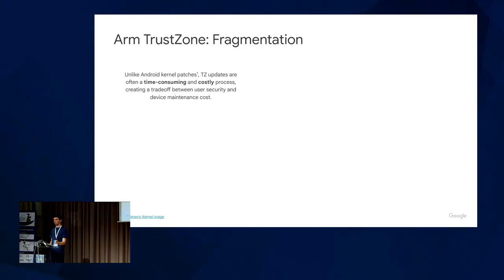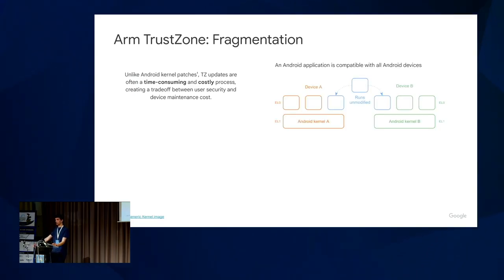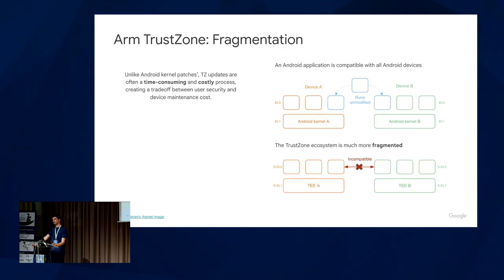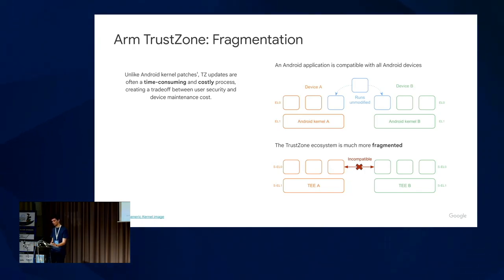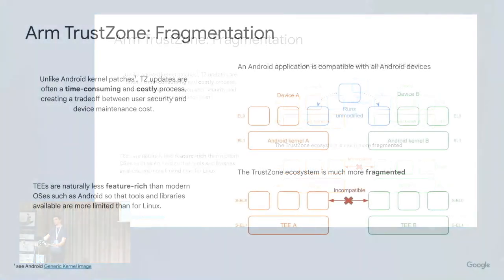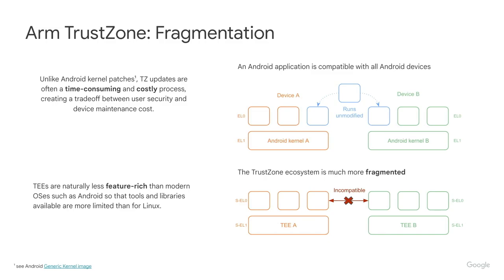From a developer perspective, if you develop an Android app you write it once and expect it to run on all Android devices mostly unmodified. In TrustZone it's different — you write it once for one TEE, and because there are multiple potentially incompatible TEEs, porting to another device may require a rewrite. TEEs are also not as feature-rich as a Linux kernel, limiting the tooling and infrastructure available to developers writing trusted applications.